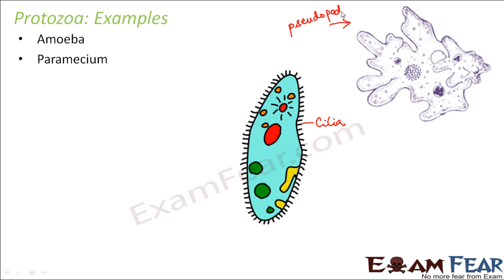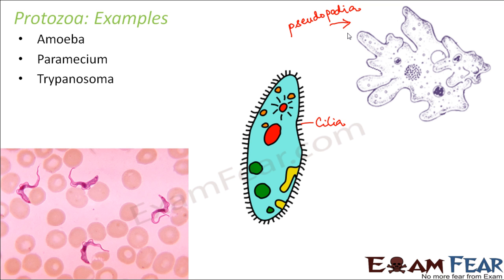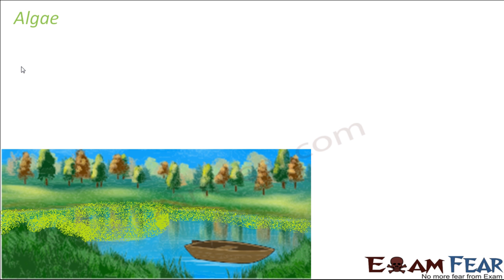Amoeba uses pseudopodia — also known as false feet — to move from place to place. Another example of protozoa is Trypanosoma, which has a flagella at the end of its body. This flagella aids in its locomotion. So all protozoa are mobile and have specific locomotory organs.